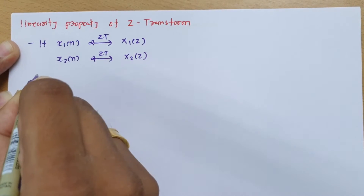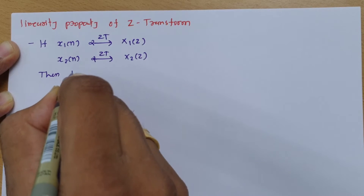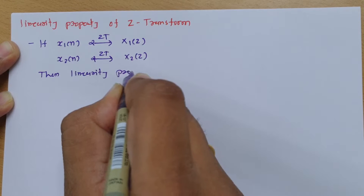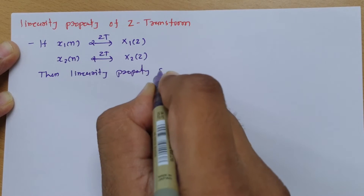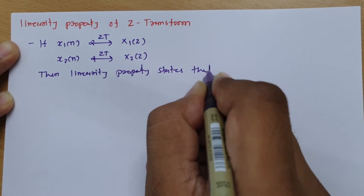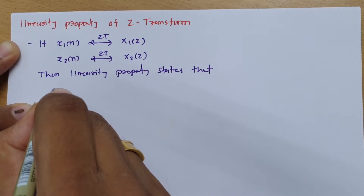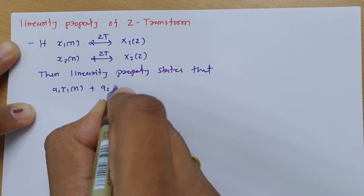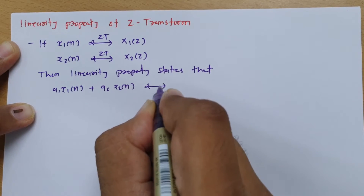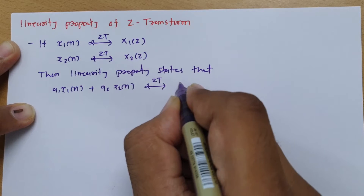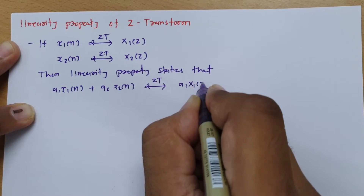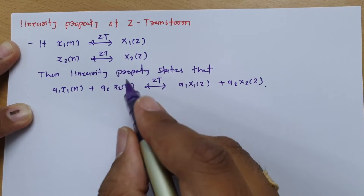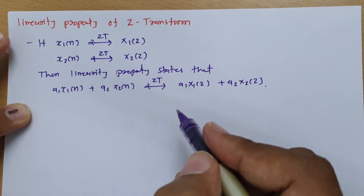Then the linearity property states that a1·x1(n) + a2·x2(n) — the Z-transform of that — has to be a1·X1(z) + a2·X2(z). This is the linearity property of the Z-transform.